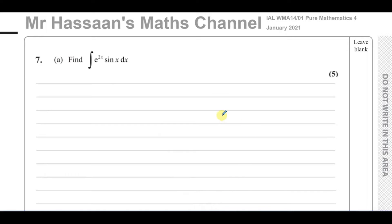Integration by parts is what we're going to do, and I'm going to apply the DI method — the new style of setting out the work for integration by parts. So you have a D column and an I column, and you have to decide what to differentiate and what to integrate.